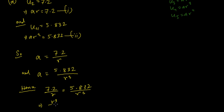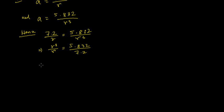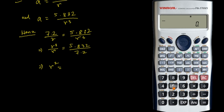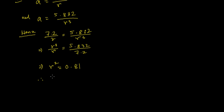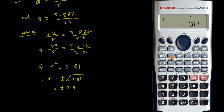Cross multiplying gives r cubed / r = 5.832 / 7.2, so r squared = 5.832 / 7.2. Dividing gives r squared = 0.81. Therefore r = plus or minus the square root of 0.81, which equals plus or minus 0.9.